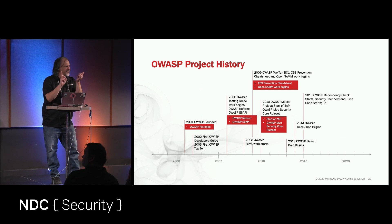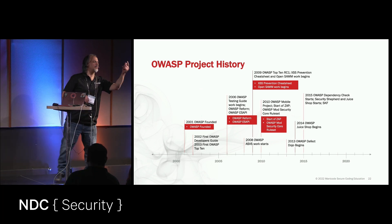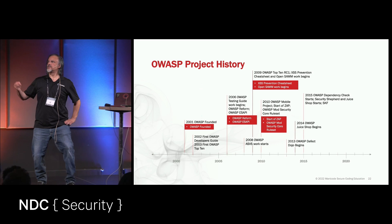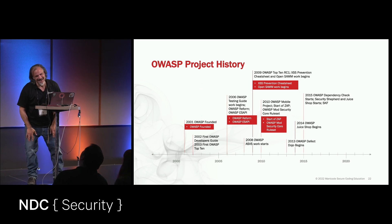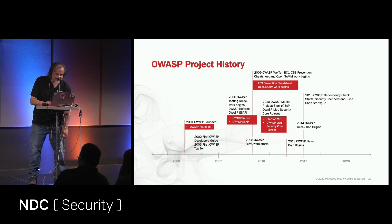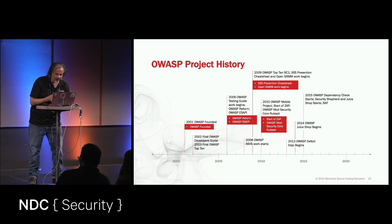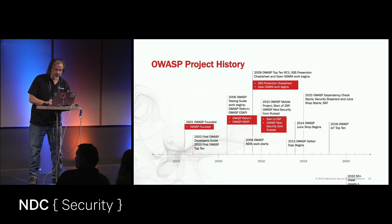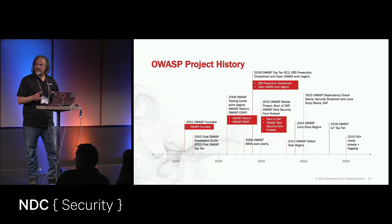In 2015, we see the OWASP Dependency Check, a third-party library security scanner. Also in 2015, Security Shepherd comes out — a great capture-the-flag system. Juice Shop shows up from our German friends. So we now have a huge number of tools. In 2018, we see the Internet of Things Top 10. By 2020, there are 50 cheat sheets — the living encyclopedia of OWASP — promoted to flagship, with hundreds of volunteers helping write guides on application security.